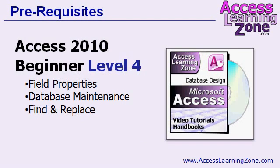This class follows Access 2010 Beginner Level 4, where we learned about field properties, database maintenance, and the find and replace function. In today's class, we will be relying on a lot of the knowledge learned in Level 1 when building queries, and Levels 3 and 4 when we worked with field properties.